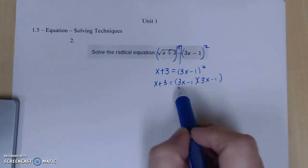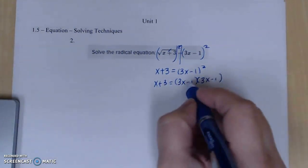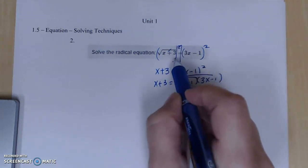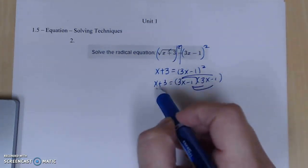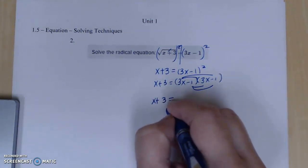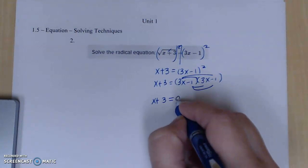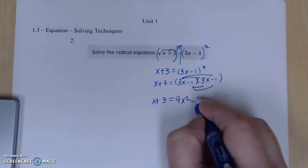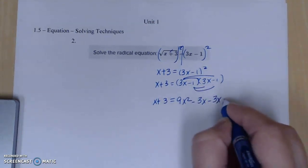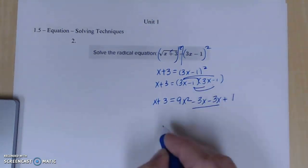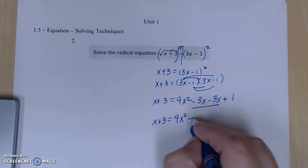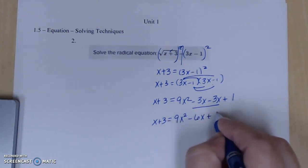And so that means I'm going to have to foil or double distribute this out. So let me just continue working with this. I first squared to get rid of the radical and now I'm just solving for x by other means. So x + 3 is going to hang out on the left. 3x times 3x is 9x². 3x times -1 gives me -3x. -1 times 3x is -3x. -1 times -1 is +1. Combine like terms. So this gives me 9x² - 6x + 1.